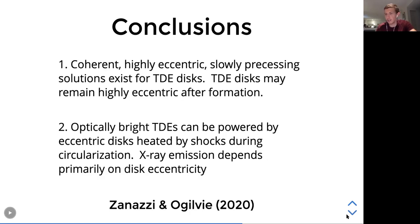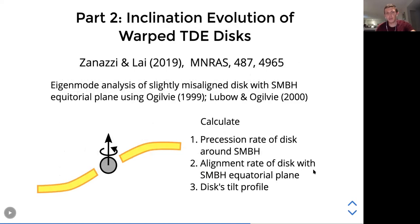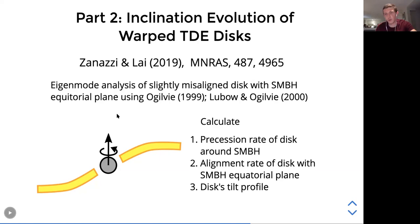Now the second part of the talk, motivated by the hard x-ray quasi-periodic oscillations seen in a number of TDEs. We discuss what happens when a TDE disk forms with a plane misaligned with respect to the spinning supermassive black hole's equatorial plane. We use the bending wave formalism developed by Gordon Ogilvie and Steven Lubow in 1999 and 2000 to calculate the disk precession rate, the alignment rate due to viscosity and fallback material, and the disk tilt profile.